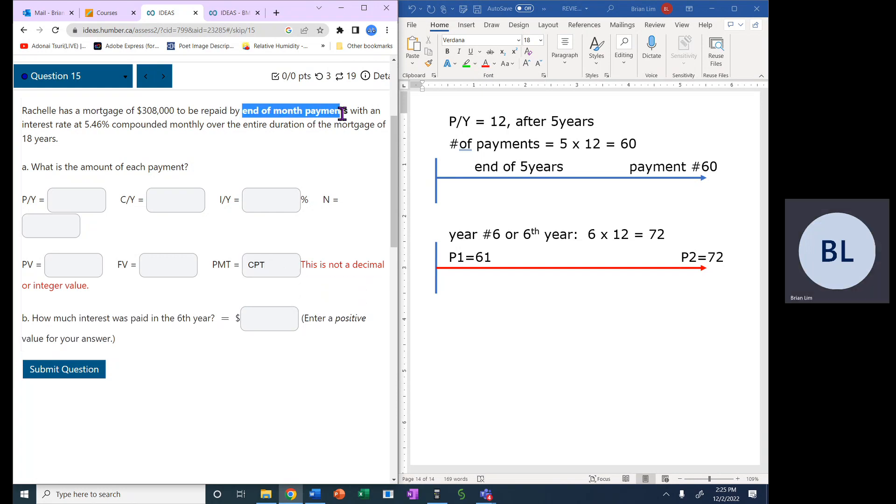The payments are end of month payments, so PY is equal to 12. The compounding is also monthly, so CY is 12.